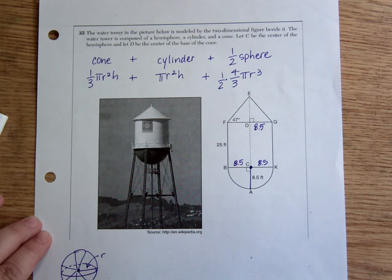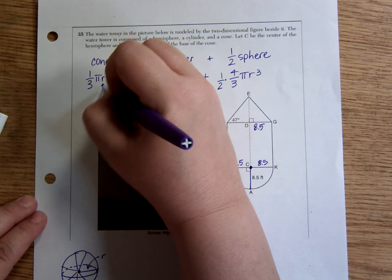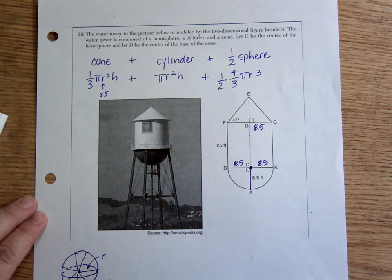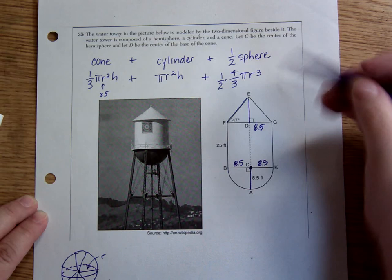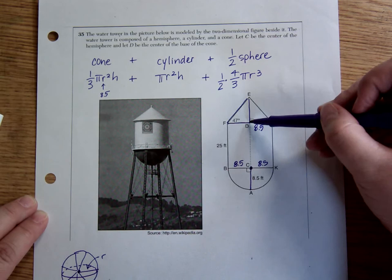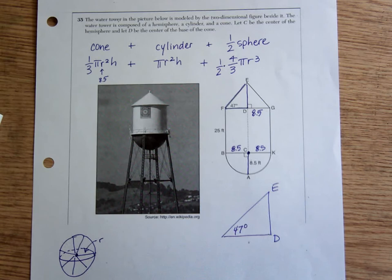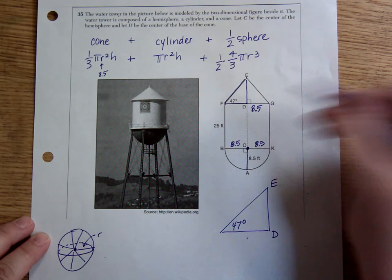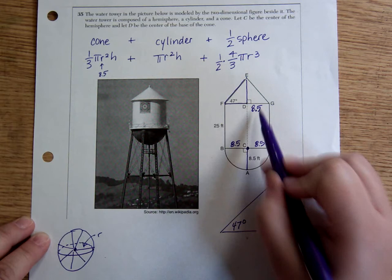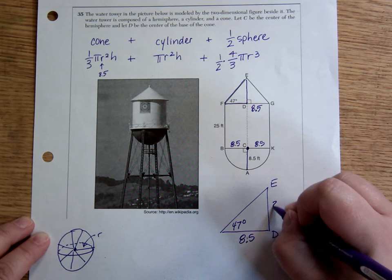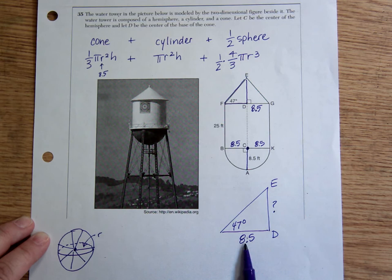The height of the cone is the next thing I have to find. This is why they gave me the 47 degrees. I'm going to have to use a right triangle trig function, meaning sine, cosine, or tangent, to figure out the height, which is DE. So let's come in here and look at that. Here's D, here's E, here's 47 degrees. From D to G is 8.5. So from F to D is also 8.5. So this is 8.5. And if I'm trying to find DE, then I'm working with the side that is opposite from the 47 degree angle and the side that's adjacent. Opposite and adjacent is tangent.